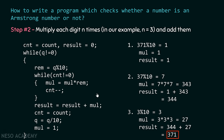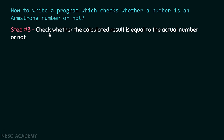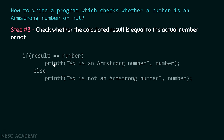Step three: check whether the calculated result equals the actual number. In our case, result equals the actual number (371), so we say it is an Armstrong number. If it were not equal, we would say it is not an Armstrong number.